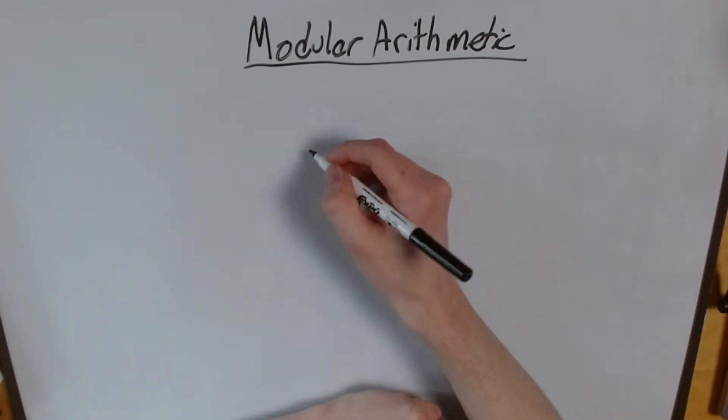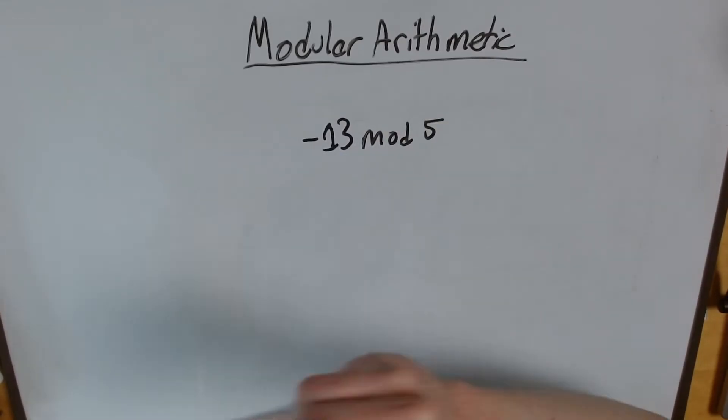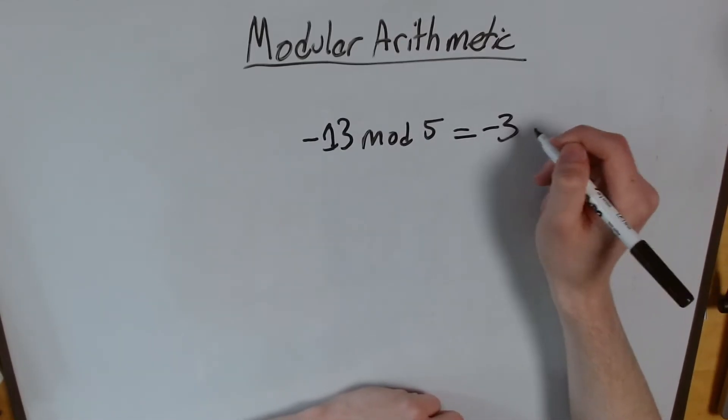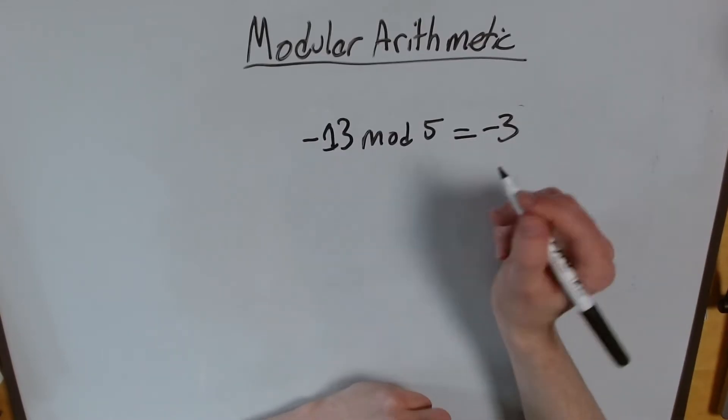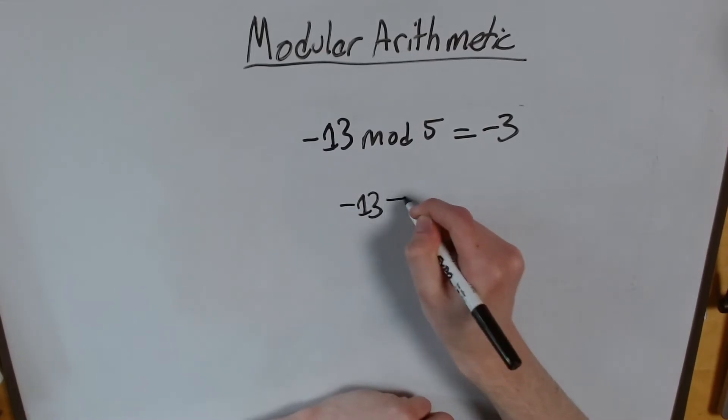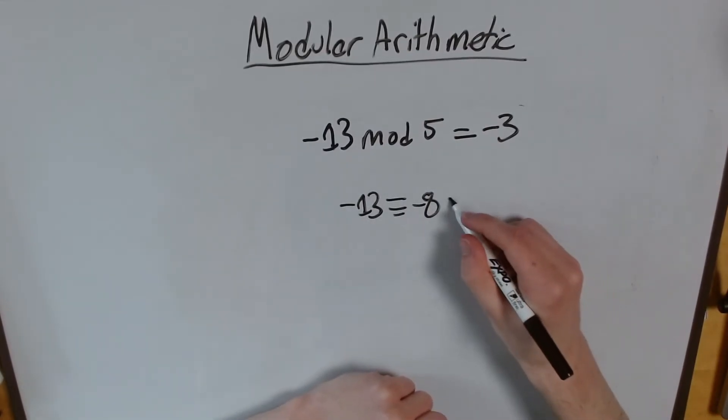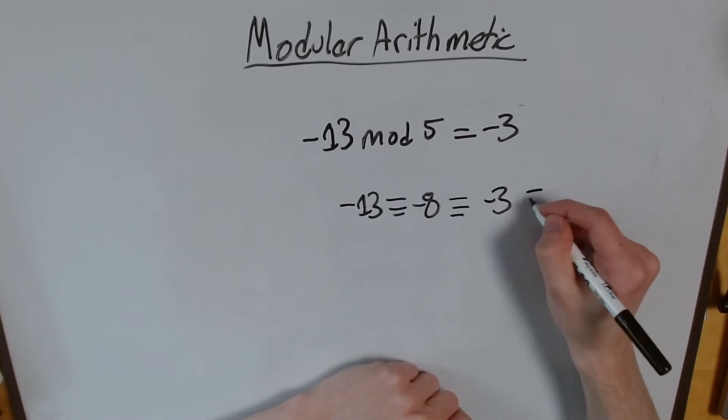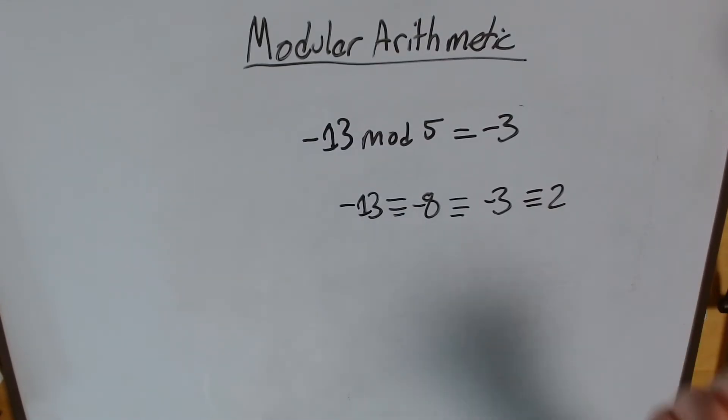For example, we can say negative 13 mod 5 is 3 less than the next multiple of 5. So it has a modulus of negative 3, a modular result of negative 3. In the same way, we can say negative 8 is also 3 less than the nearest multiple of 5. Negative 3 is less than the nearest multiple of 5. 2 is 3 less than the nearest multiple of 5, and so on and so forth.